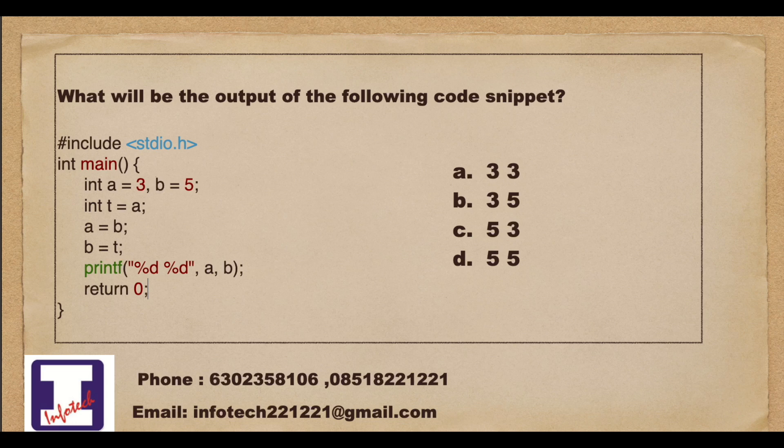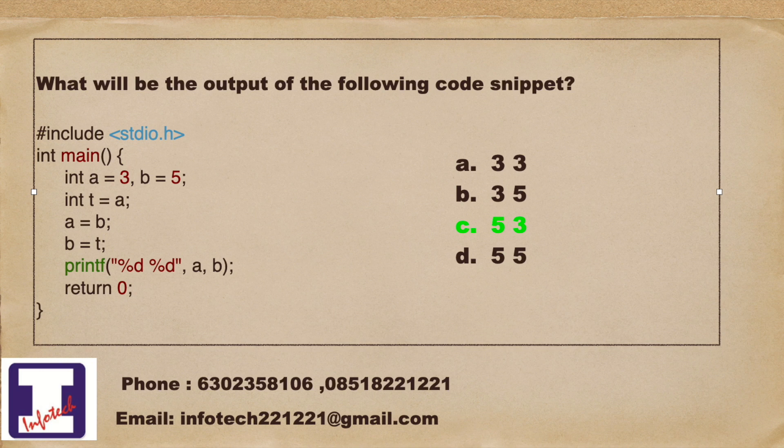What will be the output of the following code snippet? a. 33, b. 35, c. 53, d. 55. The answer is c. 53.